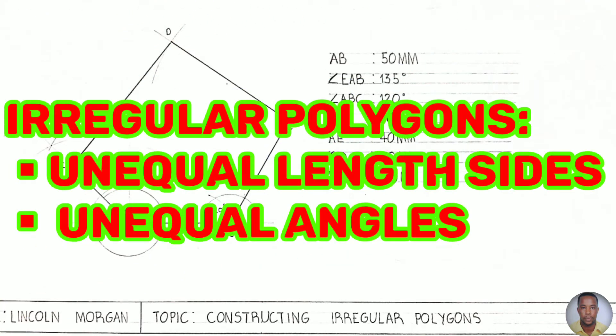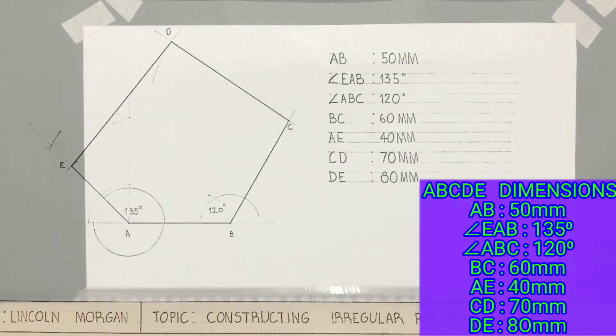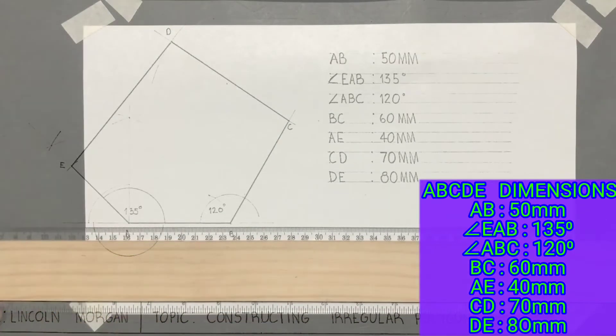From the topic irregular polygons, you'll be constructing another irregular pentagon today. Irregular polygons are those with unequal length of sides and also unequal angles. To the given dimensions on the right you will draw an irregular pentagon.